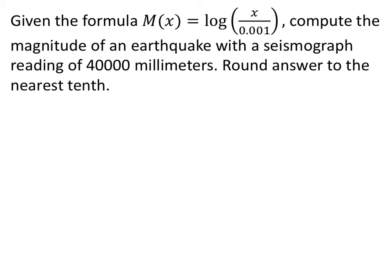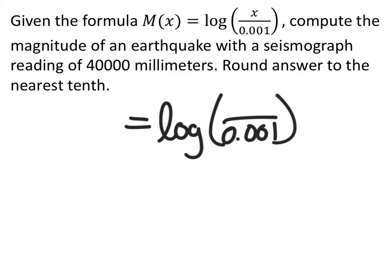So, in this example, we need to identify if we're looking for the seismograph reading or the Richter scale reading. And if we look at this, the magnitude of an earthquake with the seismograph reading of 40,000 millimeters. That means that we're going to replace the value of x with this 40,000 right here.